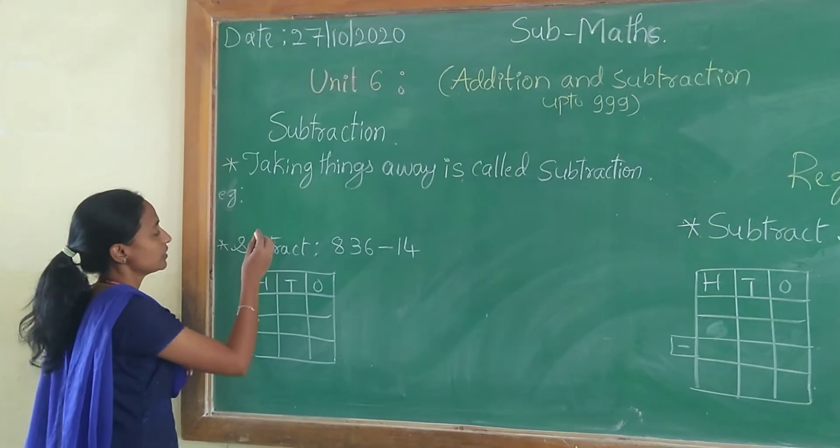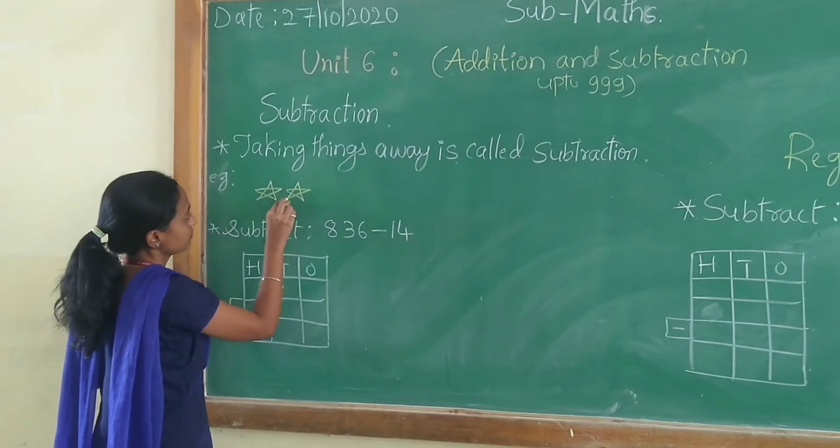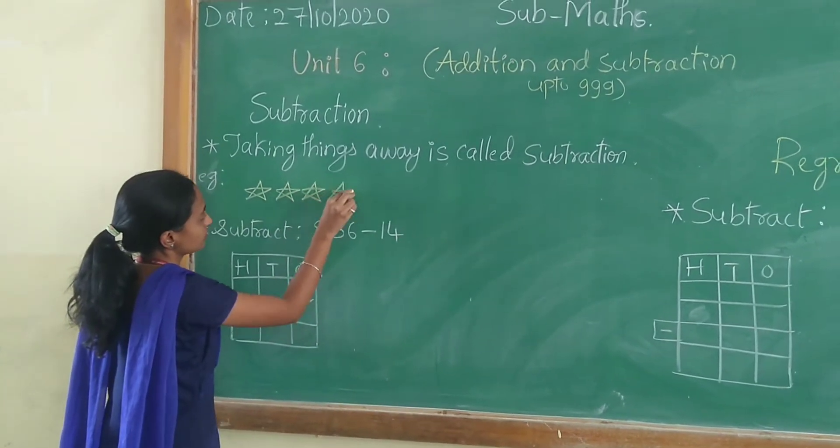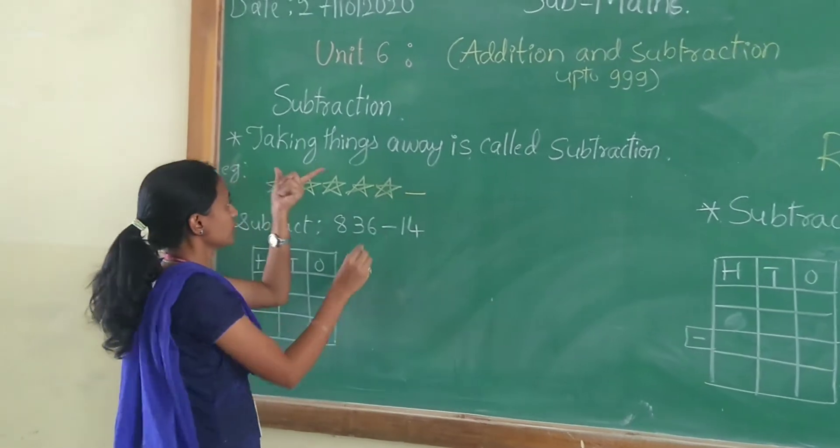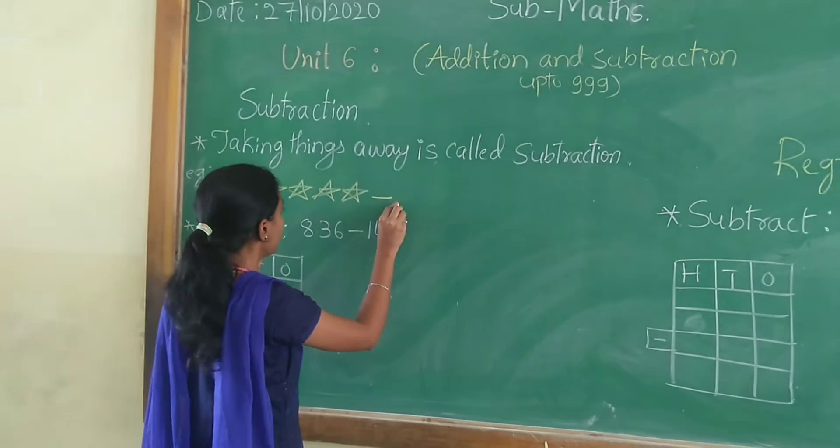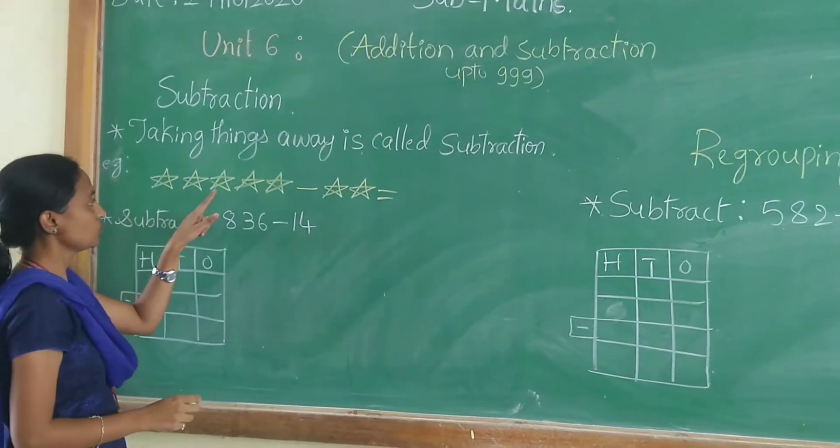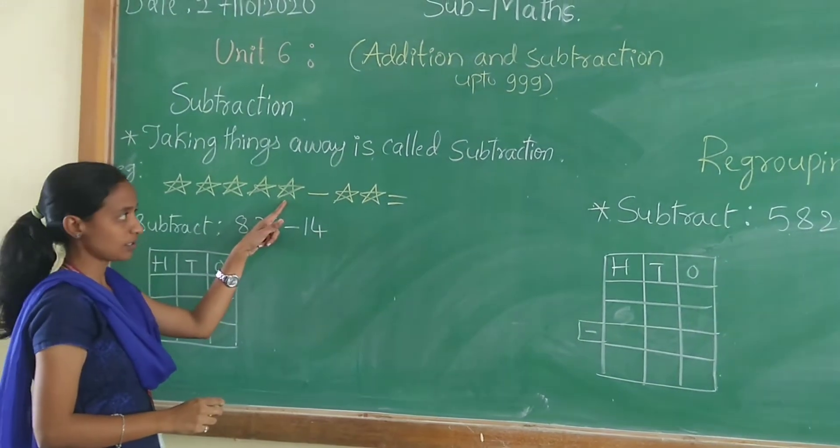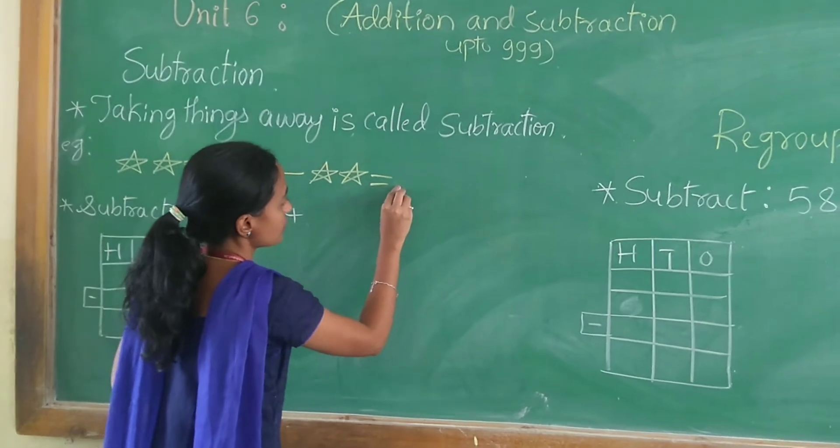Let us have an example here. Take 5 stars and take away 2 stars from 5 stars. 1, 2, 3, 4, 5. 5 stars minus 2 stars, you will get 3 stars.